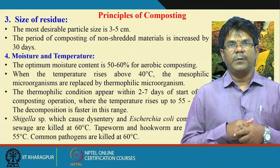Regarding size of residue, the most desirable particle size is around 3 to 5 centimeters. If residue is larger it will still compost, but it will take more time. To reduce composting time and make compost quickly, the size of waste materials must be reduced using a shredder. Using a shredder, waste materials of different sizes can be processed to a final size of less than 5 centimeters, which is the optimum size for preparing good compost quickly.